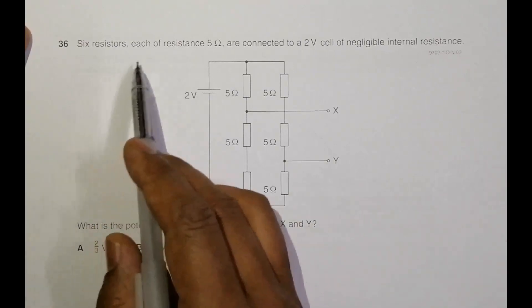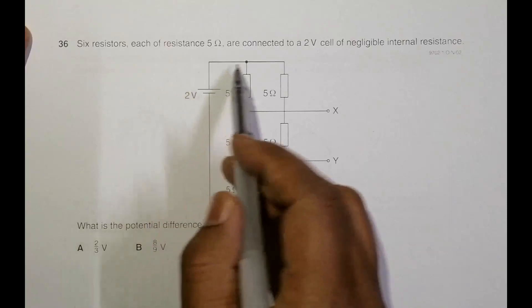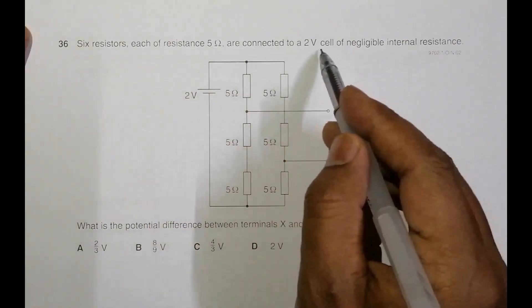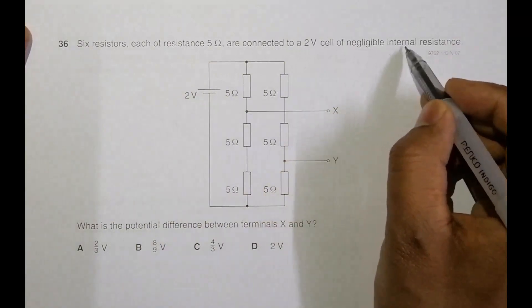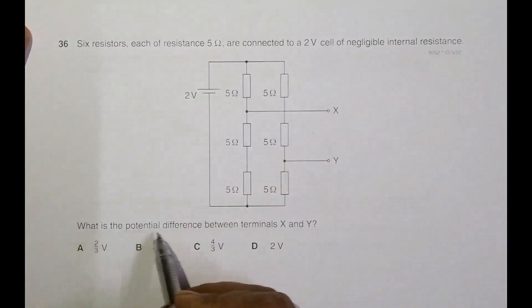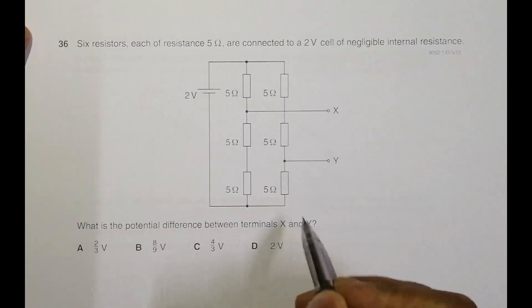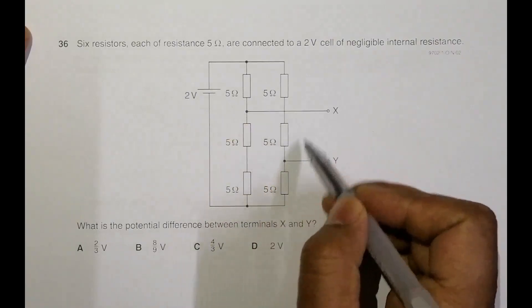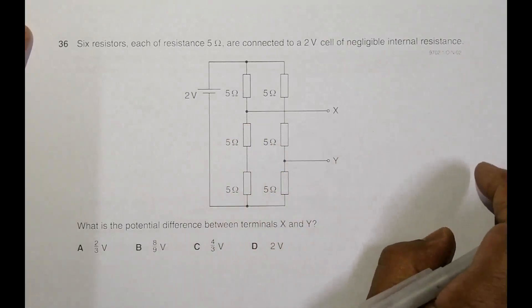So it says 6 resistors each of resistance 5 ohm, all of them are connected to a 2 volt cell of negligible internal resistance. What is the potential difference between terminals X and Y? So we have X terminal here and Y here. So we have to find the PD in between these two terminals.